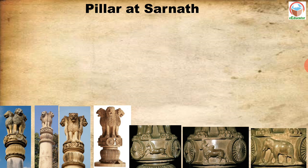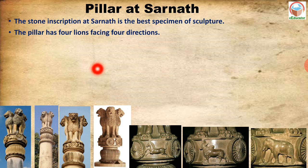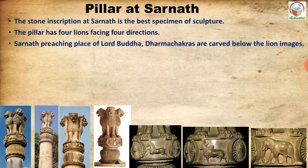Now let us discuss the Pillar at Sarnath. The stone inscription at Sarnath is the best specimen of sculpture. It is engraved from one single large stone. The pillar has four lions facing the four directions. Sarnath was the preaching place of Lord Buddha — it was the place where Lord Buddha used to deliver his teachings.